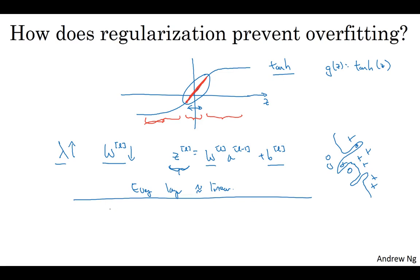Before wrapping up our discussion on regularization, I just want to give you one implementation tip, which is that when implementing regularization, we took our definition of the cost function J, and we actually modified it by adding this extra term that penalizes the weights being too large. And so if you implement gradient descent, one of the steps to debug gradient descent is to plot the cost function J as a function of the number of iterations of gradient descent.